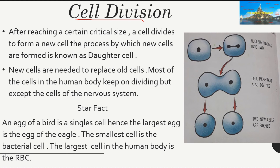Here is how it happens: when a cell reaches its critical size, it starts splitting. First the nucleus divides into two, then the cell membrane and cytoplasm also divide into two parts. After this process is complete, two completely new cells are formed. One is known as the daughter cell and the other is the mother cell.